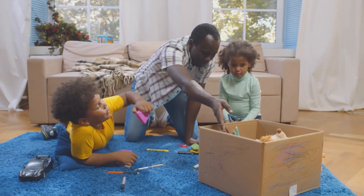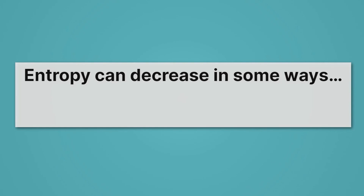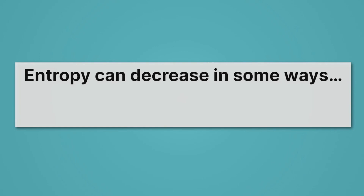And so though this room is getting a little neater, there are other ways in which entropy is changing that may be increasing even more than the room is decreasing. Basically, what we're saying is entropy can decrease in some ways. That's okay — it doesn't violate the second law so long as it increases in others.